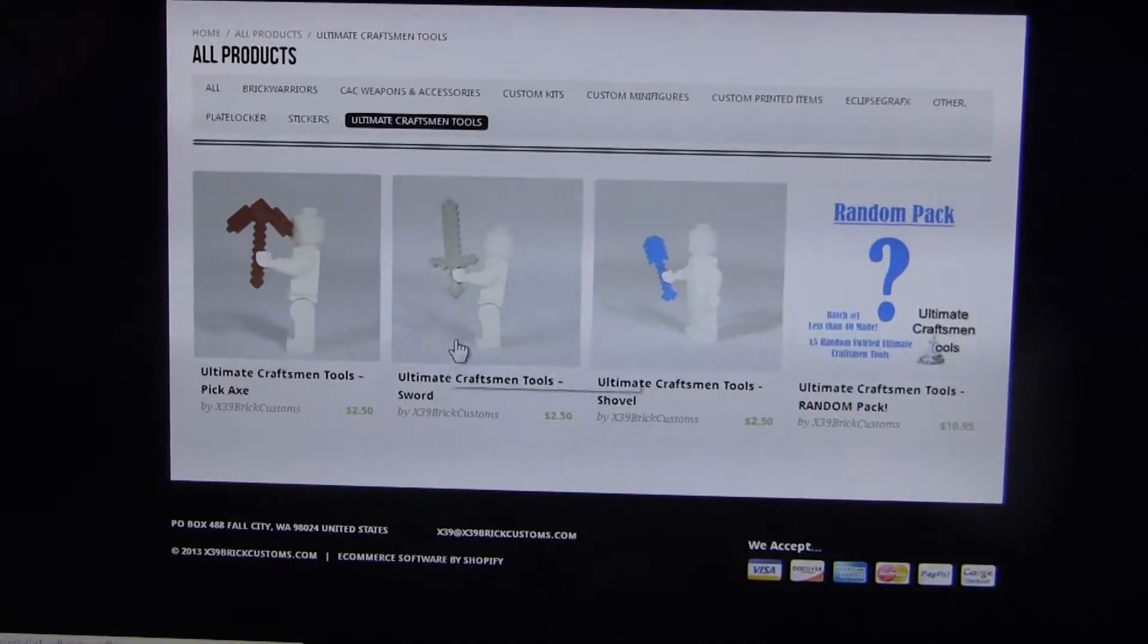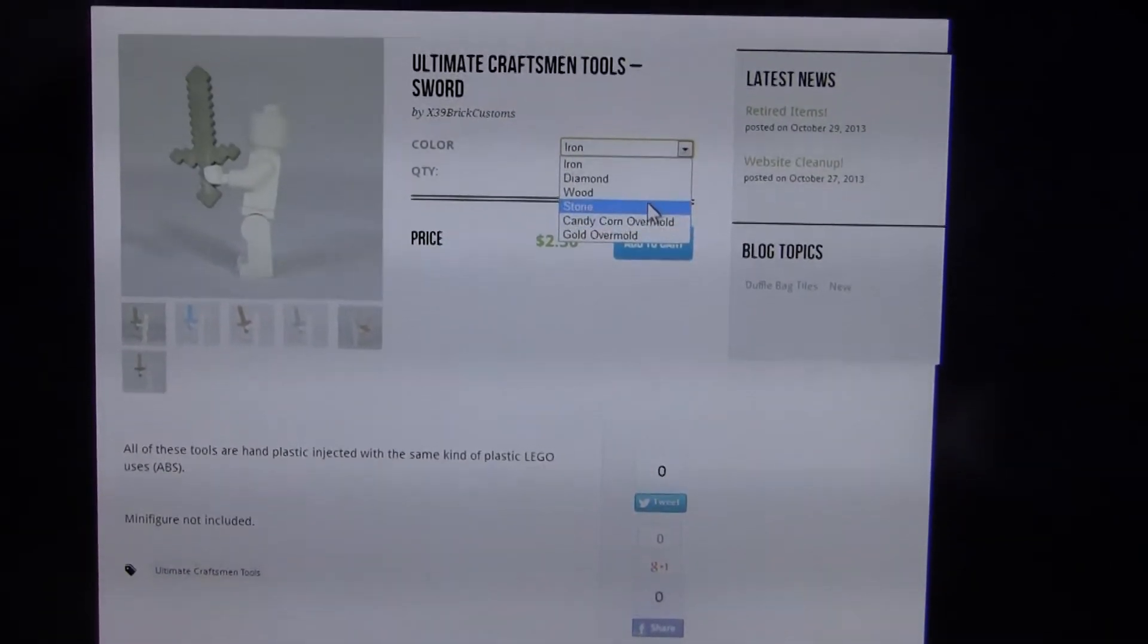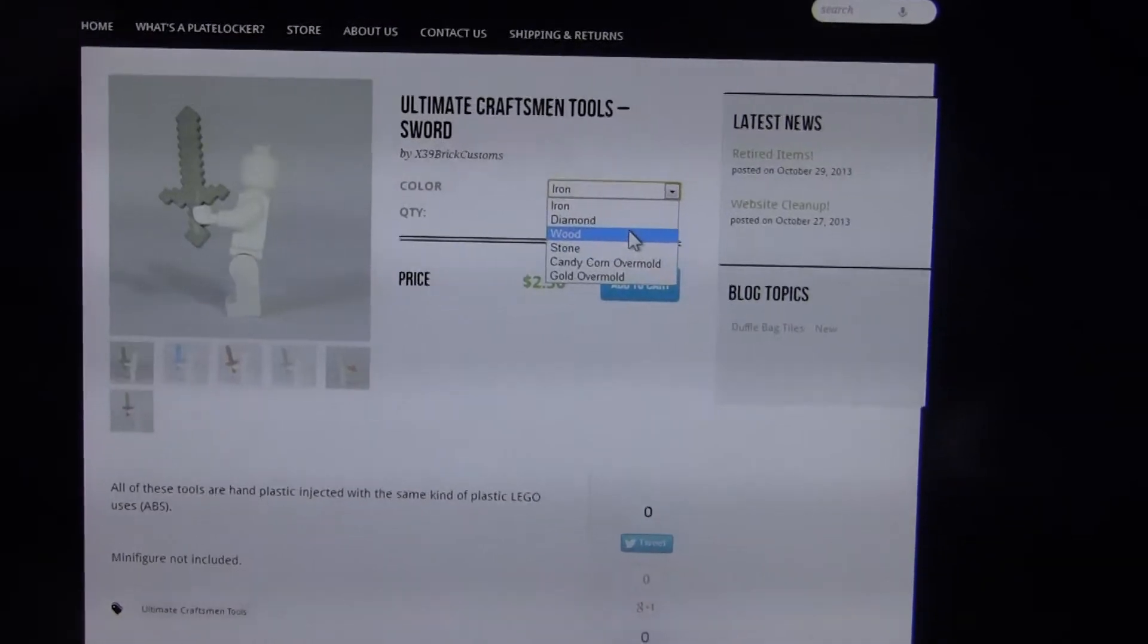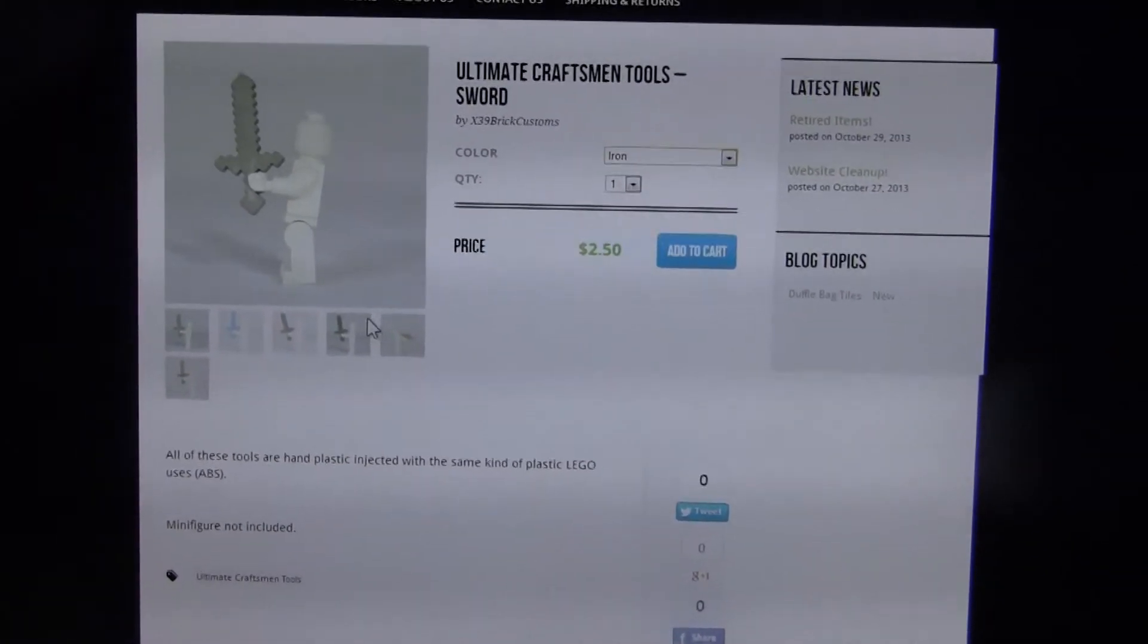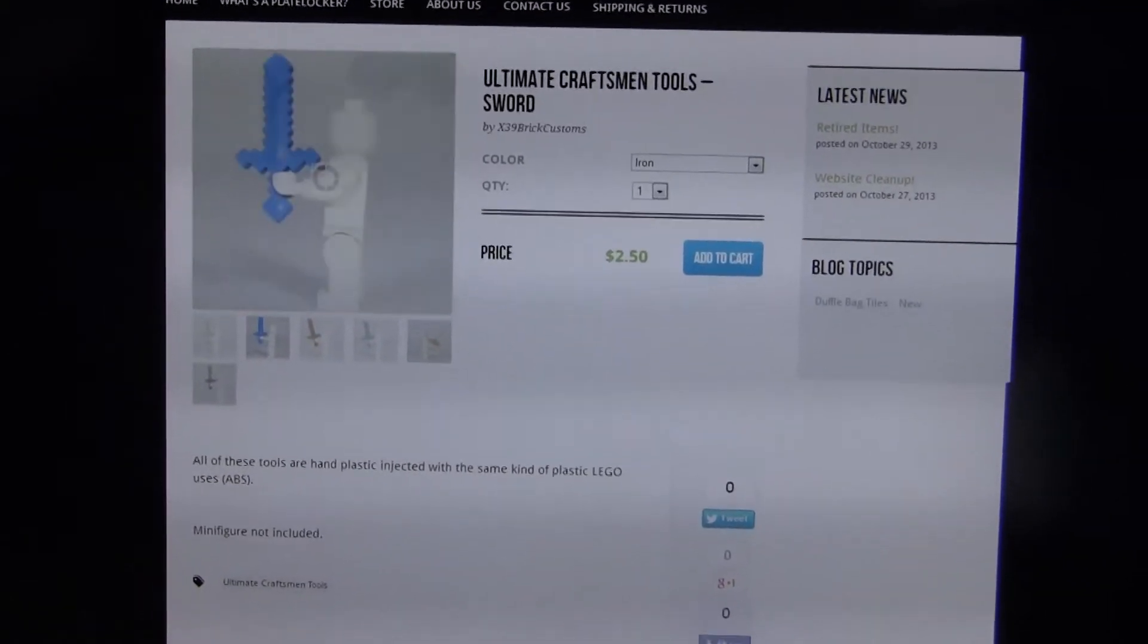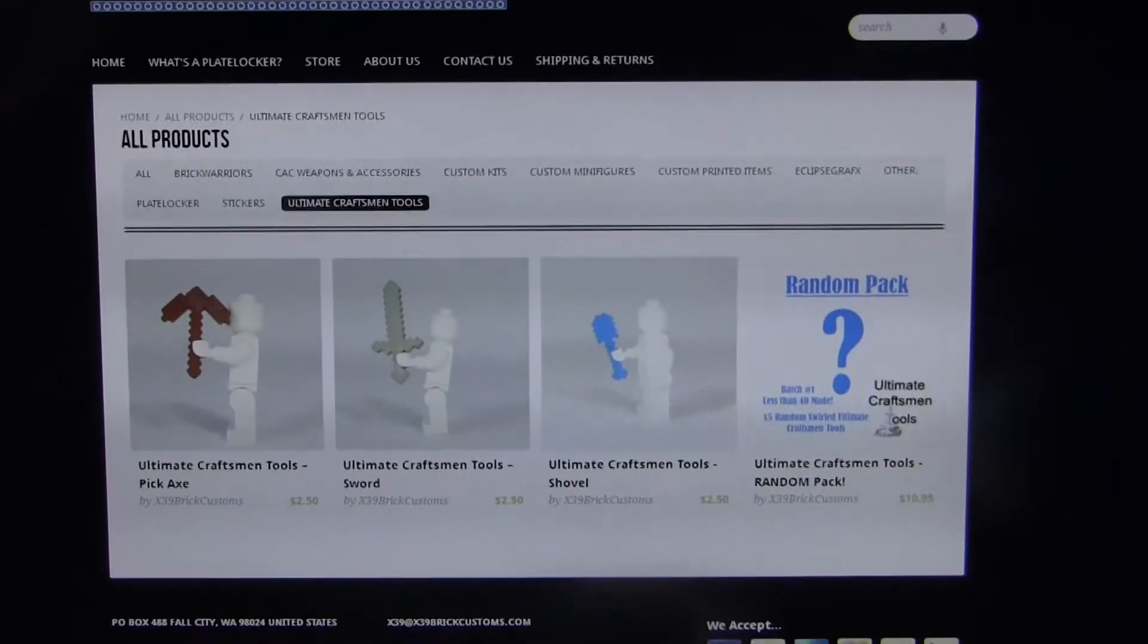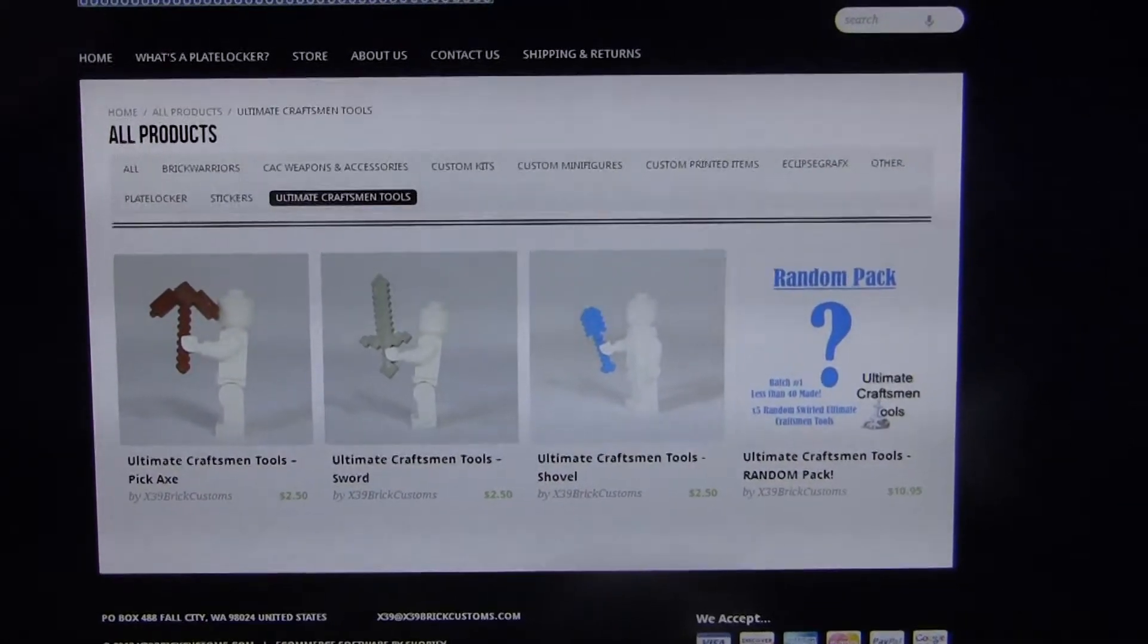Only these products. But if you click on the sword, you have all the options like the candy cone or overmold, stone, wood, and then here all the pictures down here. So they're all condensed down. This discount only applies to these products here.